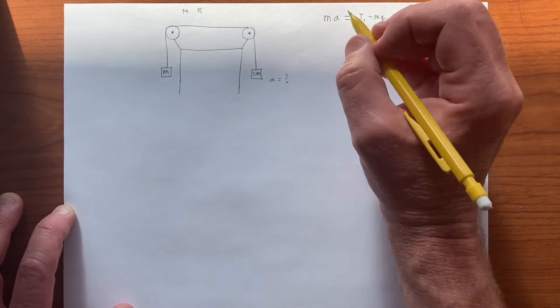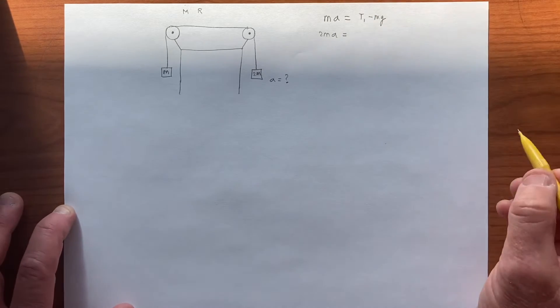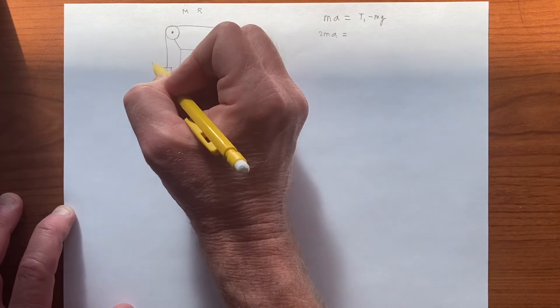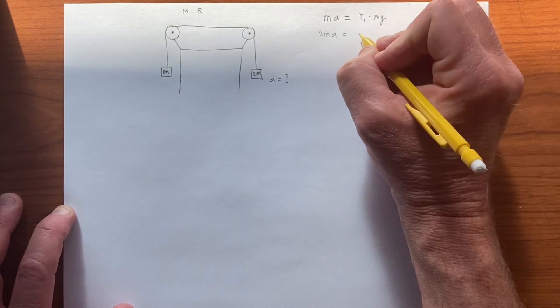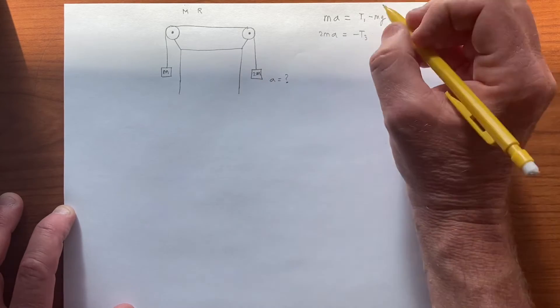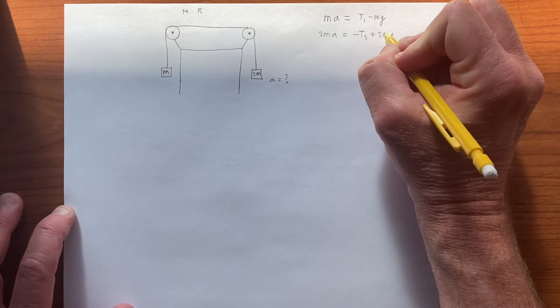And this one, instead we have 2mA is equal to, let's call this tension here t3, and it's that way, which is this way, so it's opposite of t1. So this is a minus t3, and so the force of gravity here, which is 2mg, needs to come in positive.